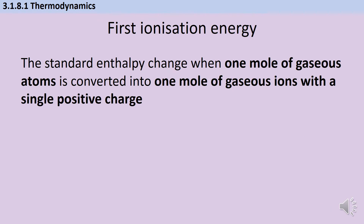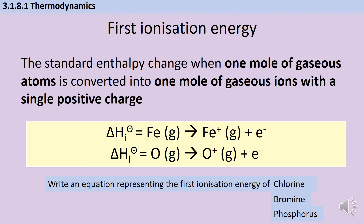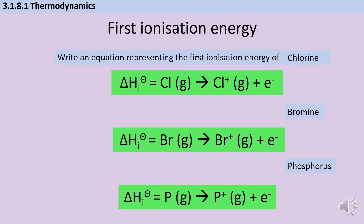Now, you met the first ionization energy in year 12 when you learned about mass spectrometry. This is the standard enthalpy change when a mole of gaseous atoms each loses an electron to form a mole of gaseous ions. Remember: it doesn't matter what type of ion an atom would usually make in a chemical reaction — the first ionization energy is just about the energy change when one electron is taken away from any atom. For each example we start with a gaseous atom and finish with a gaseous ion and an electron.